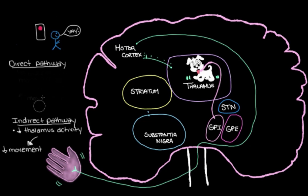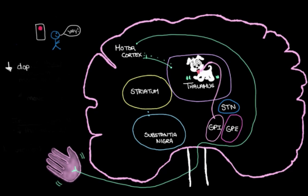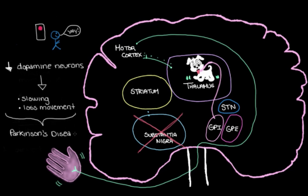So overall, with a loss of dopamine neurons in the nigrostriatal pathway, the substantia nigra just can't initiate more movement in the direct pathway, and it can't prevent an excessive reduction in movement in the indirect pathway. And that's why this loss of dopamine neurons in the substantia nigra causes the slowing down and loss of movements that we see in someone with Parkinson's disease.